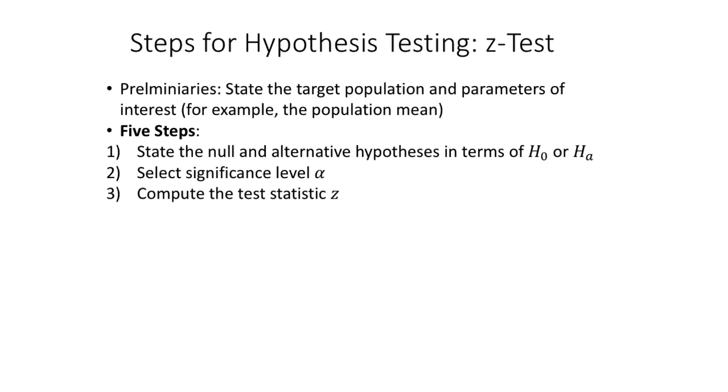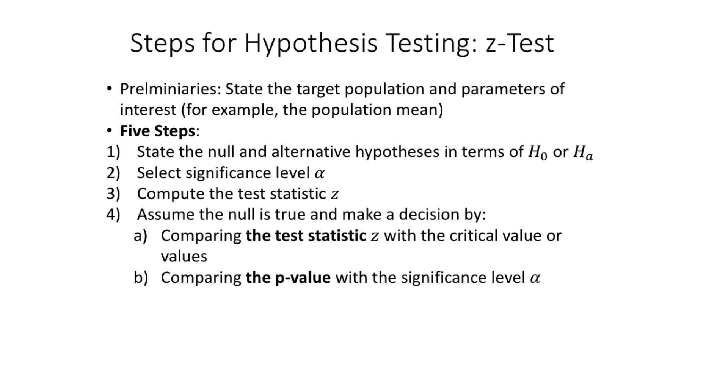Then you need to compute the test statistic, which we call Z. That's the third step. And then you assume the null is true. I'm just going to assume the null hypothesis is true. Then you make a decision by either comparing the test statistic Z with the critical value or values, or you compare the P value with the significance level based on alpha.